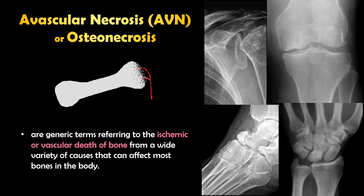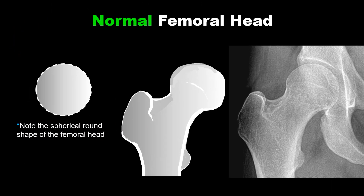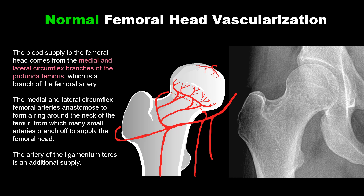As the vascular supply to the bone is damaged, the bone cells die, altering the appearance of the bone. The normal femoral head should be spherical and round in shape. The blood supply to the femoral head comes from the medial and lateral circumflex branches of the profunda femoris, which is a branch of the femoral artery. These arteries anastomose to form a ring around the neck of the femur, from which many small arteries branch off to supply the femoral head.